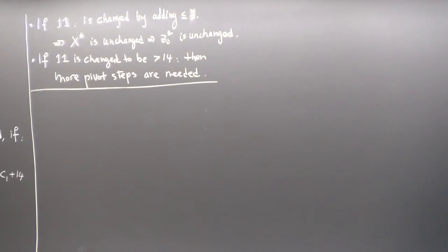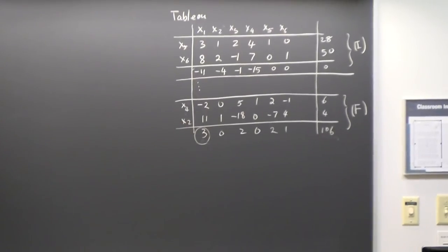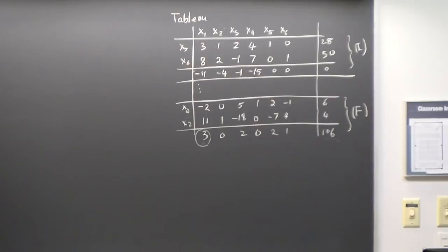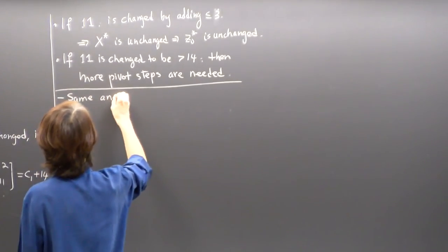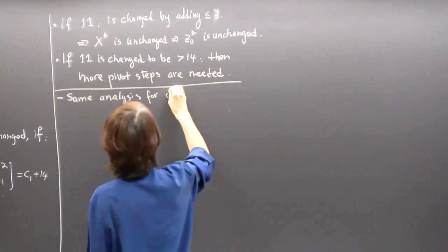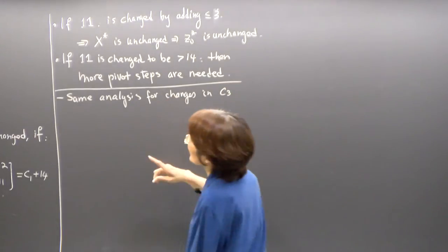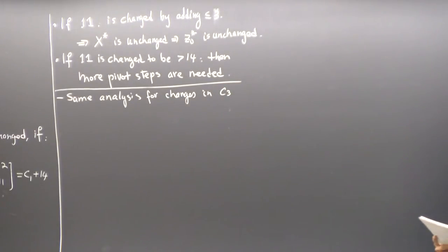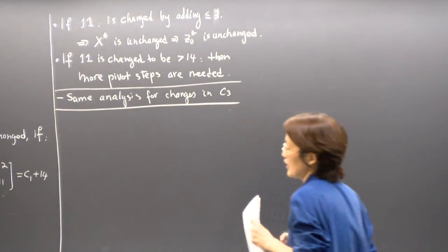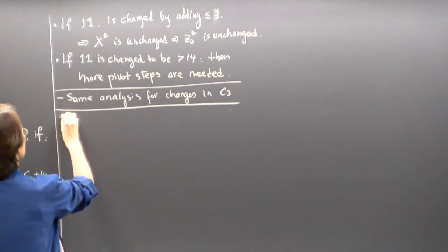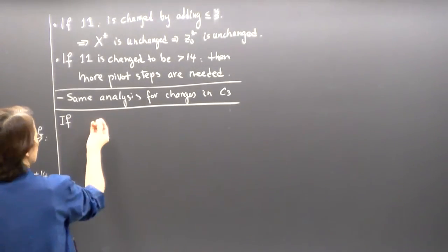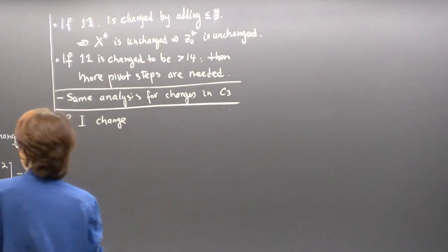A similar argument can be applied if I want to change C3. That number is not in front of a basic variable either. So the same analysis applies for changes in C3. Now let's see if it is a basic variable — let's say if I change C4. X4 is a basic variable.